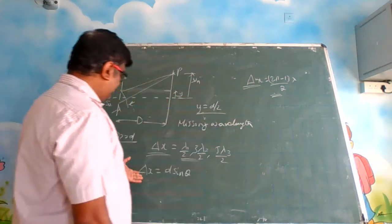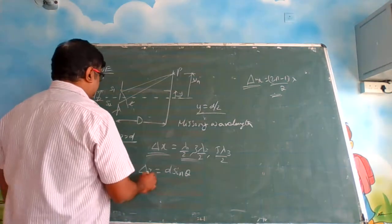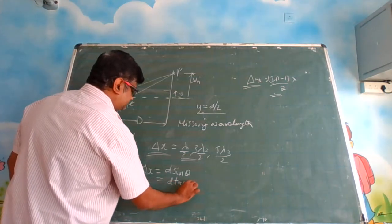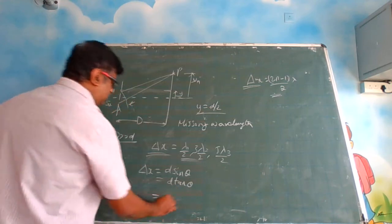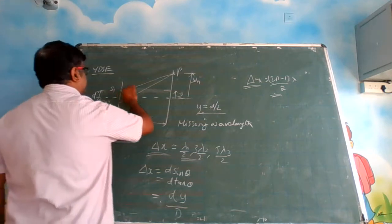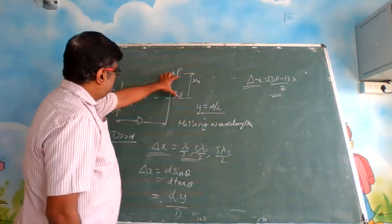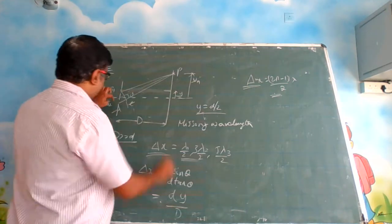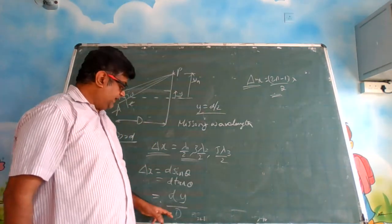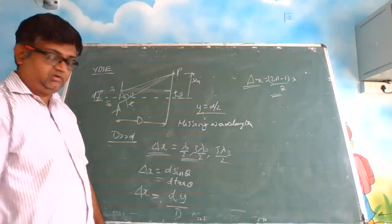Delta x equals d sine theta. When the angle is very small, you say it is d sine theta, or d times y divided by capital D. Using the small-angle approximation, tan theta equals y divided by D, so delta x equals d·y divided by capital D.